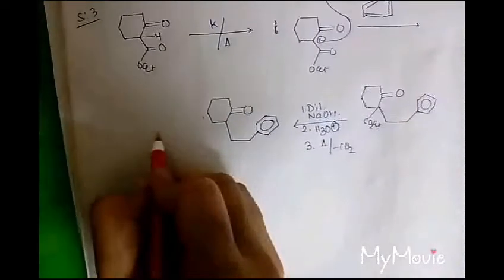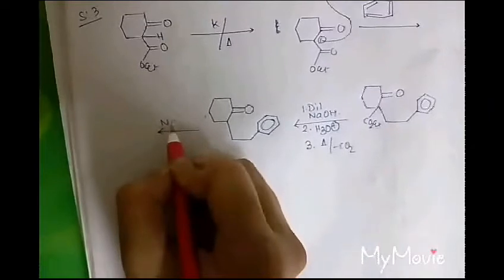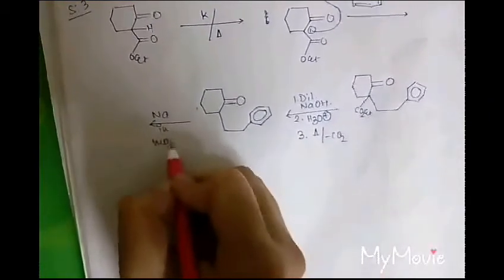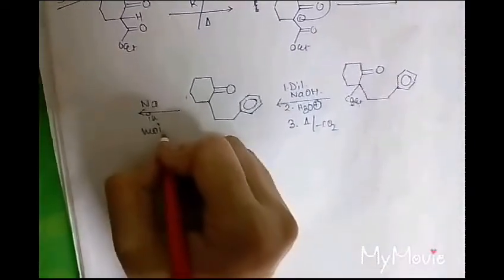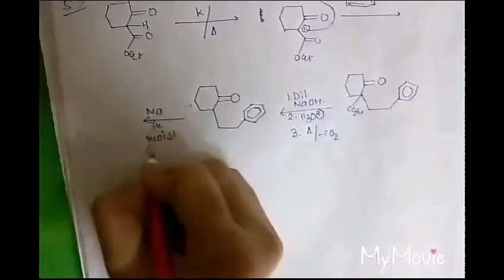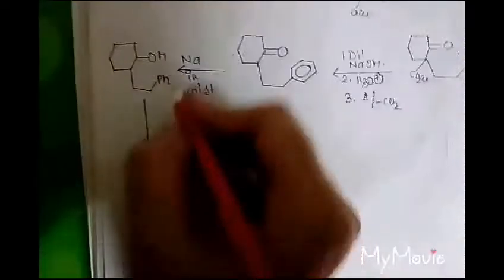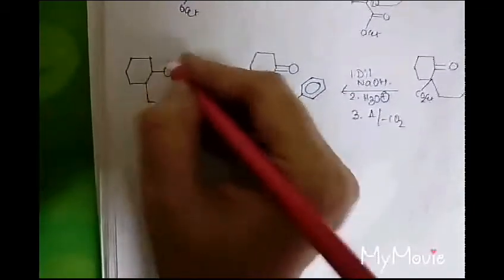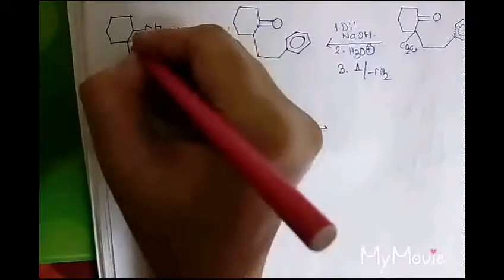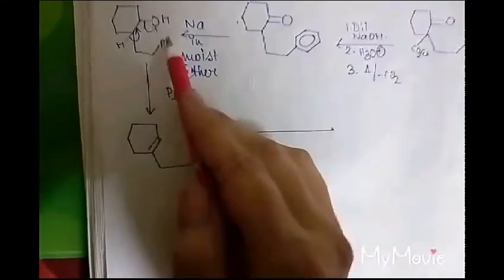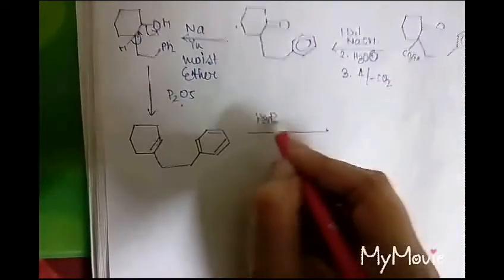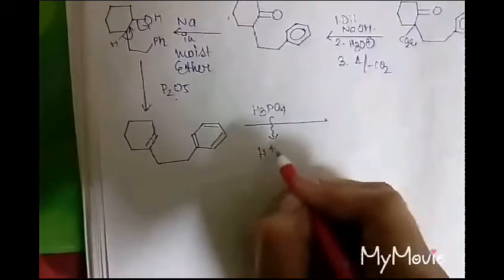To this, sodium in moist ether is added to reduce the keto group. The carbonyl group will be reduced to an alcohol (OH). Then P2O5 is added. P2O5 in the presence of H2O will give H3PO4, which will produce H+ in the medium. H+ will attack to this position, and OH2 will leave the medium. The double bond will shift, and cyclization will occur.